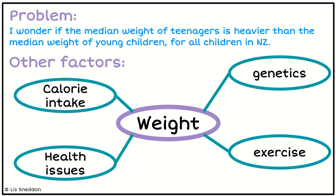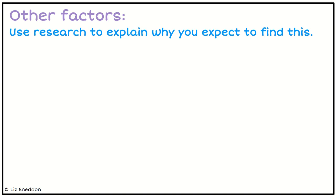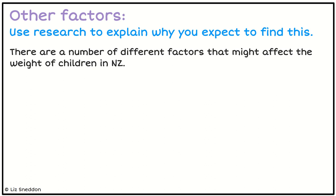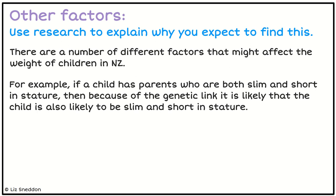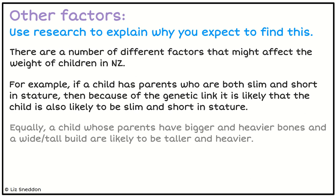So let's now try and write up an example of this. There are a number of different factors that could affect the weight of children in New Zealand. If a child has parents that are both slim and short in stature, then because of the genetic link it's likely that the child is also going to be slim and short. Equally, a child whose parents have bigger and heavier bones and a wide, tall build are also likely to be taller and heavier themselves.